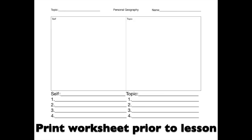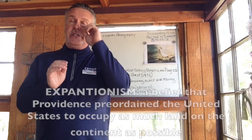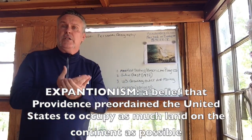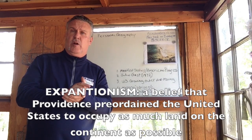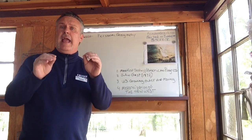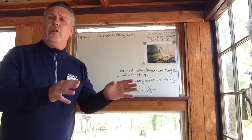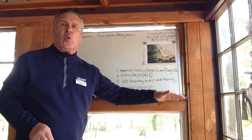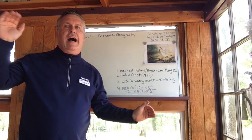On the page, at the top it says 'Personal Geography.' On the left, I would write 'Expansion,' which is one of our Oklahoma social studies standards. This lesson can be used from grade school to high school.